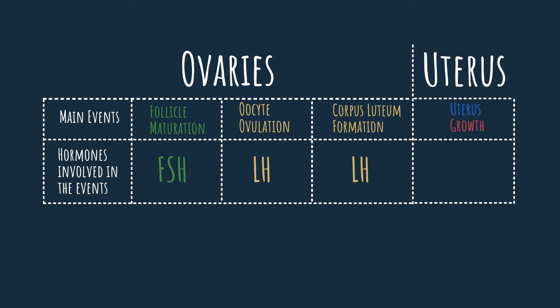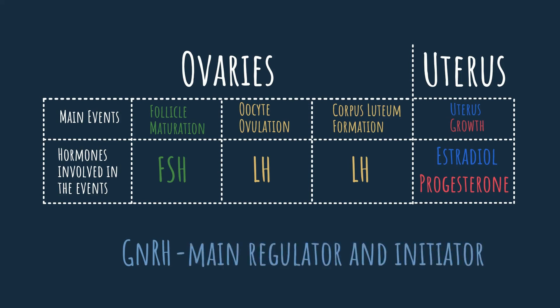The third and fourth hormones are estradiol and progesterone, and these hormones prepare the uterus for embryo implantation. The fifth and last hormone is the gonadotropin releasing hormone, or GnRH. This hormone controls the menstrual cycle by acting as the main regulator and initiator of the cycle. Without it, all the events we can see on the screen that make up a normal menstrual cycle could not exist.